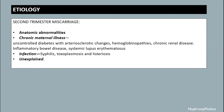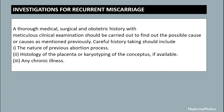Second trimester miscarriages include anatomic abnormalities and chronic maternal illness like uncontrolled diabetes with arteriosclerotic changes, hemoglobinopathies, chronic renal disease, inflammatory bowel disease, and SLE. Infections include syphilis, toxoplasmosis, and listeriosis. Other causes include unexplained causes.